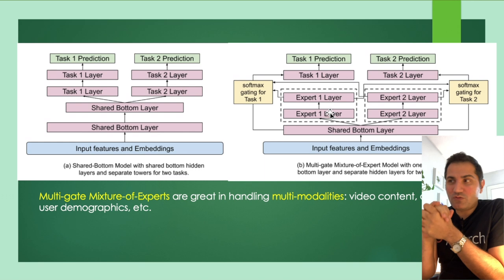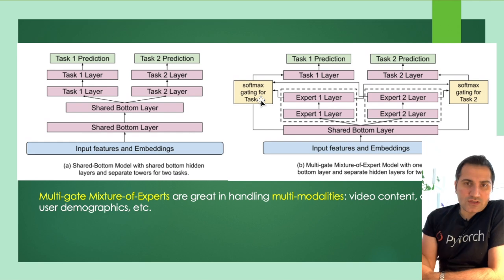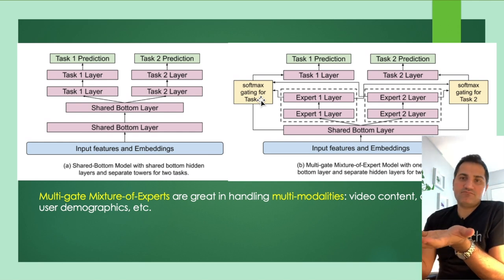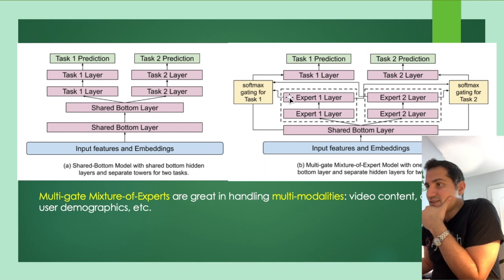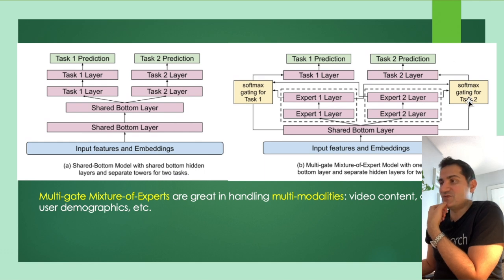But how do we know which experts should share their knowledge? The answer is multi-gate. We don't know which experts should share knowledge, so we let the network learn it. The outputs of expert one and expert two go to a gate for task one, and that gate decides whether these two experts should share their knowledge. The same applies for the task two tower.